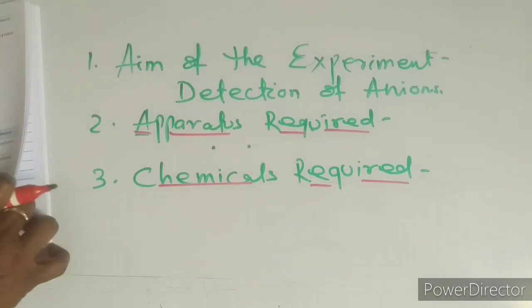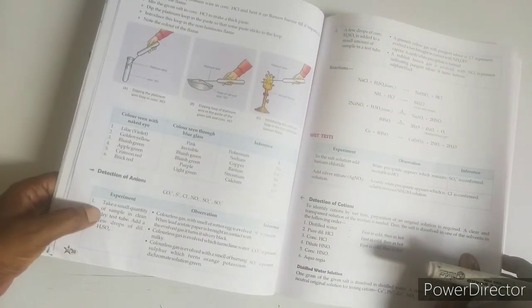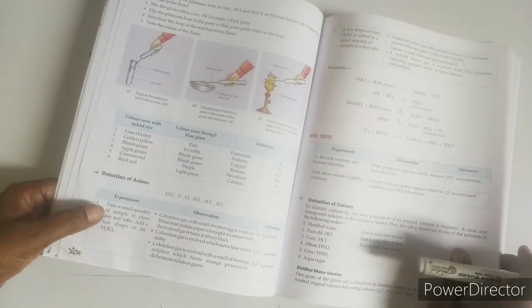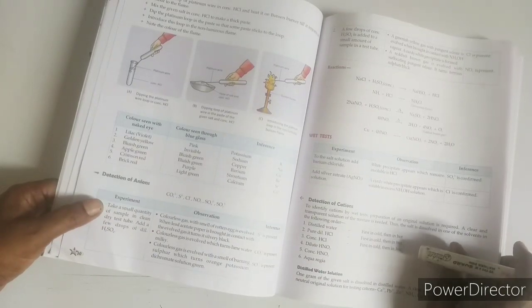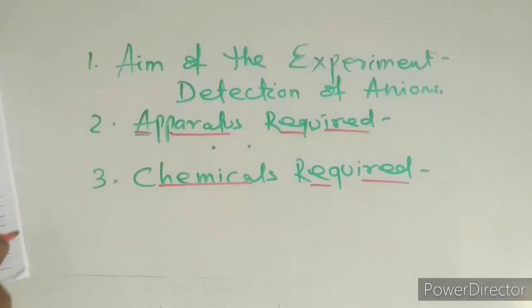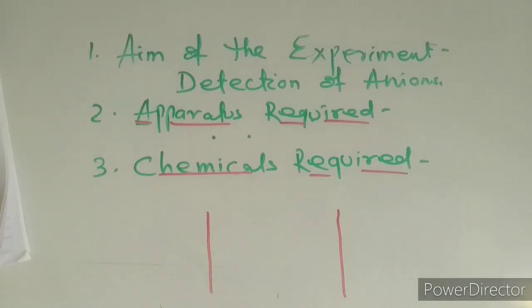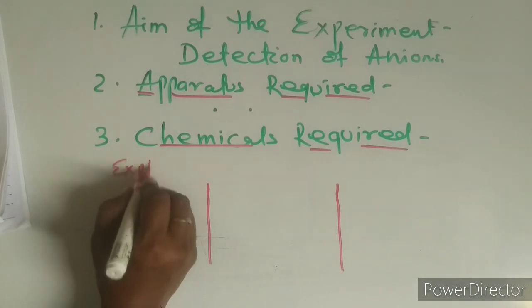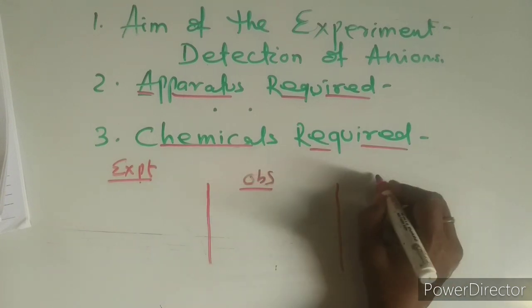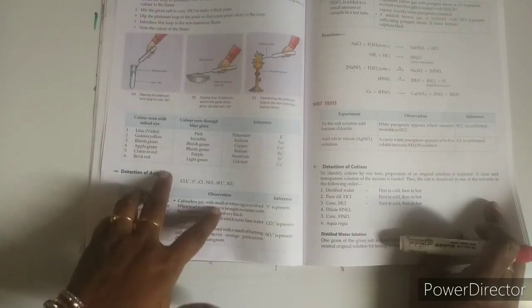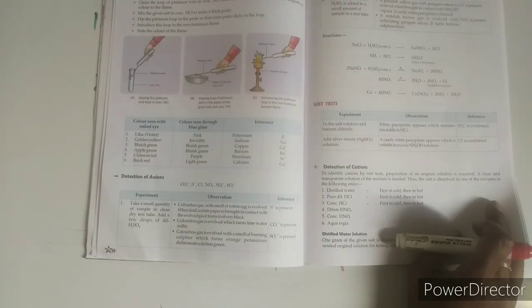Under chemicals required, whatever chemicals you have taken must be mentioned. For example, if you are testing for any sulfide, let it be ZnS — you will also use lead acetate paper and lead acetate solution. Then the three columns: experiment, observation, and inference — write them as given in the lab manual. Experiment four will be detection of cations.